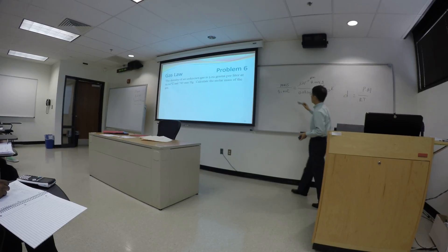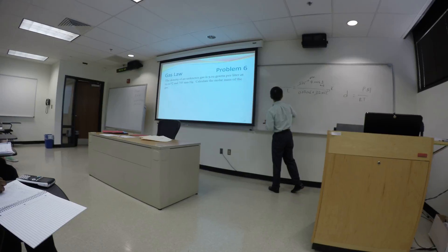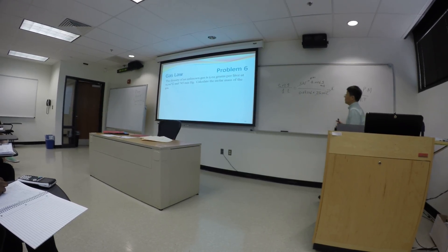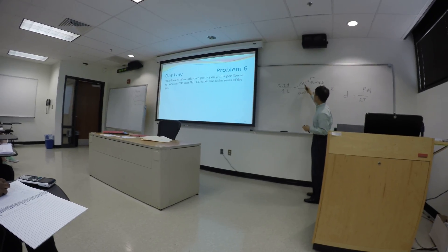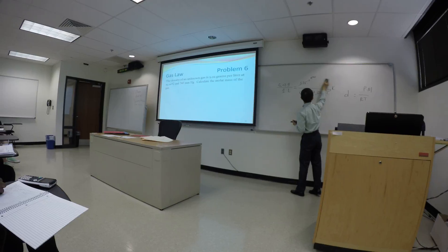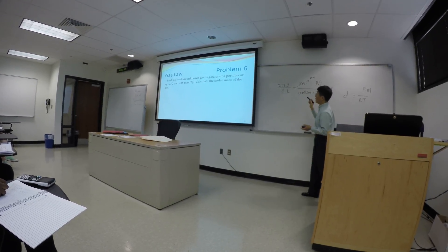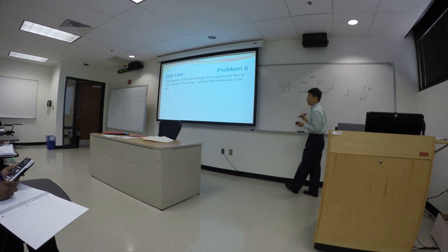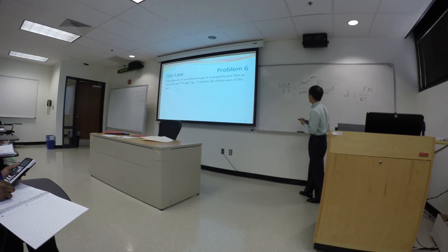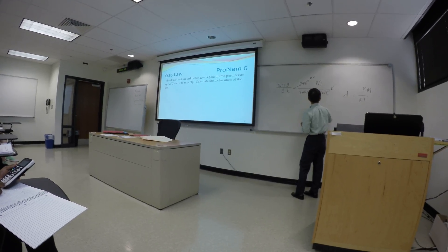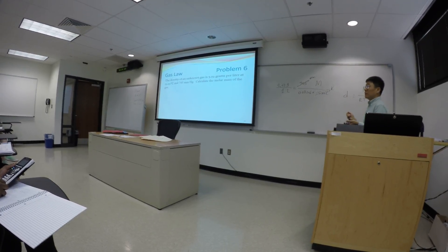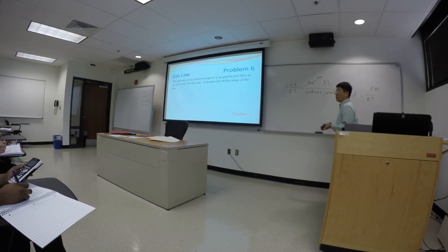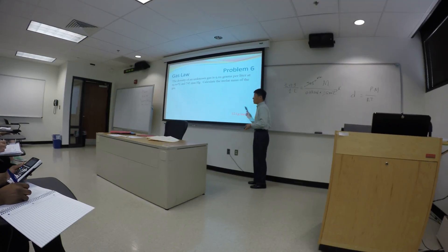So in this case, again, we have 5.02 gram per liter. So that's how we write the density, 5.02 gram per liter, equals to PM/RT. Well, M in this case is the unknown. We don't know what the M is. So that's what we're trying to figure out. The pressure is 745 millimeter mercury. You can't use 745, you have to convert it into atm. And the temperature is 15 degrees Celsius. You can't use 15 degrees Celsius. You have to convert it into Kelvin. And plug in the right number with the right unit, and you end up with the answer, somewhere around 121 gram per mole. Do this calculation after class. Make sure this is the answer that you get.